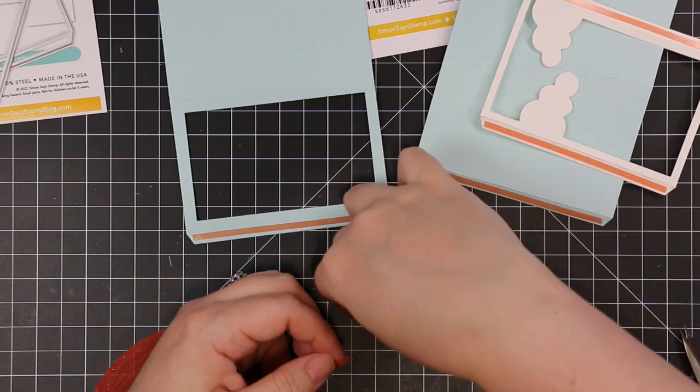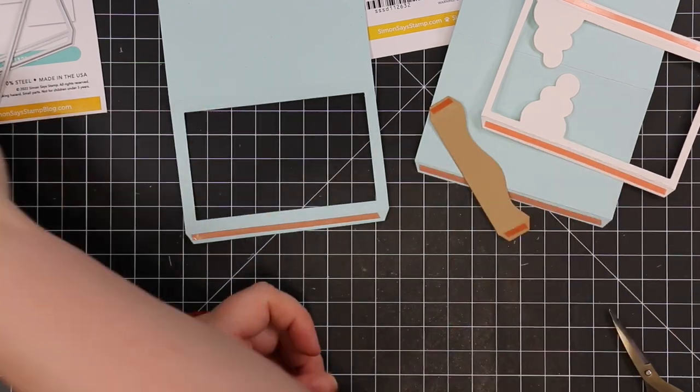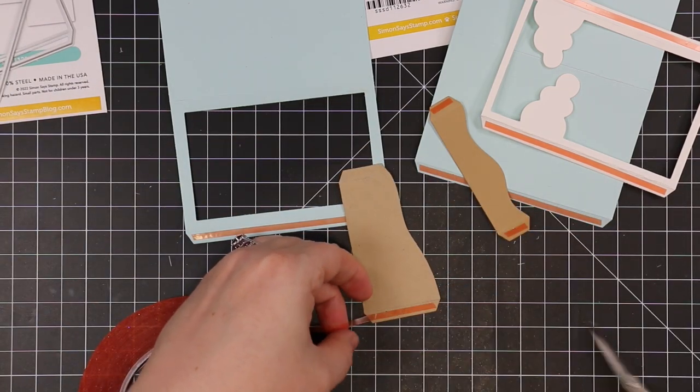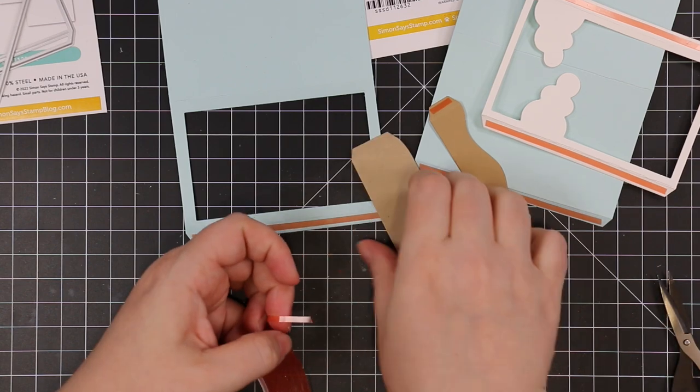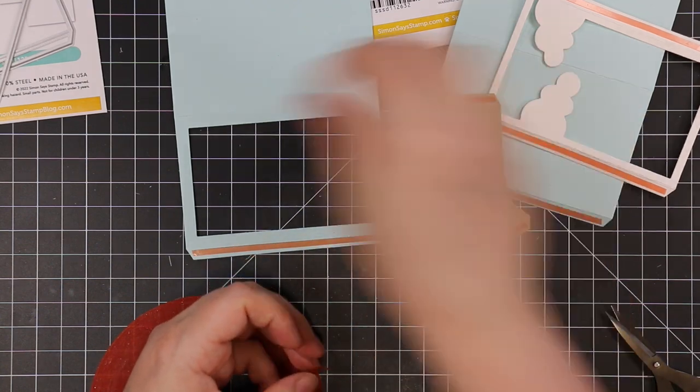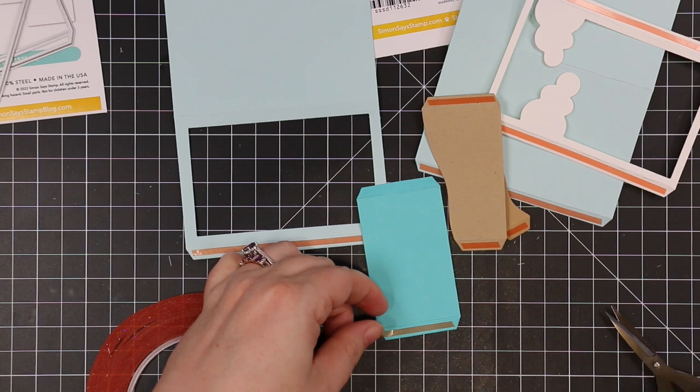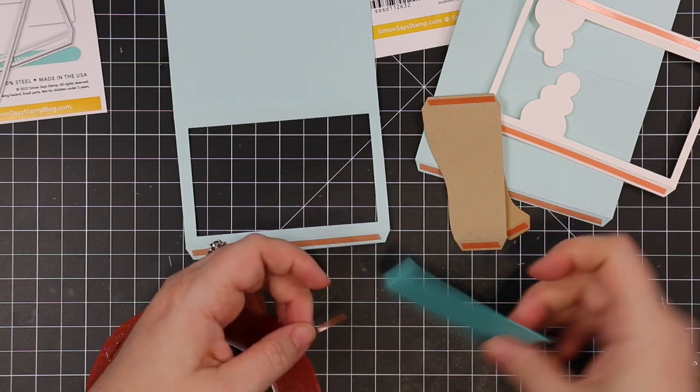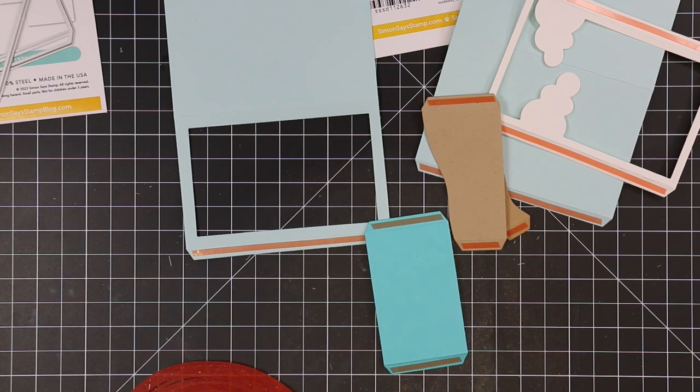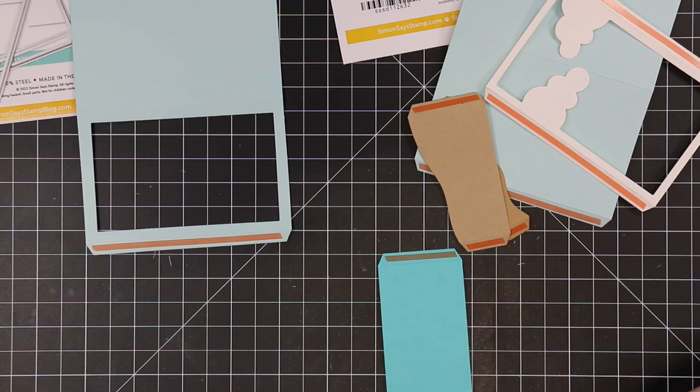All you do is apply your adhesive to just the flaps. I'm using this one-eighth inch red line adhesive from Simon. I use my little Tim Holtz snips for cutting this adhesive because it's super sticky. These are the same snips I use for adhesive scissors. I use them to cut my foam tapes, anything sticky. They're perfect because they have that little Teflon coating.